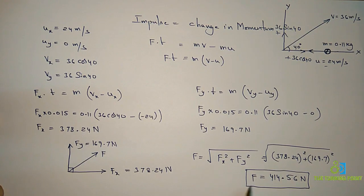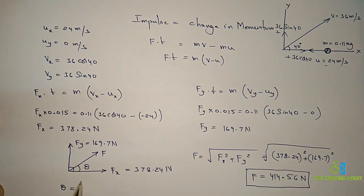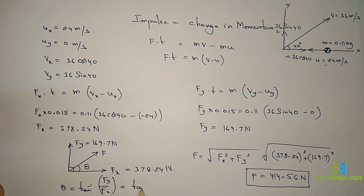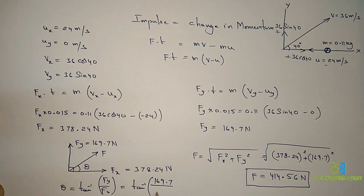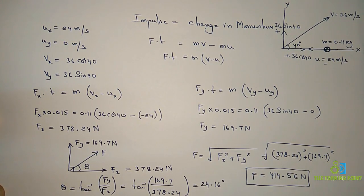Since force is a vector, we must also specify its direction. Let the angle be θ. Then θ = tan⁻¹(Fy / Fx) = tan⁻¹(169.7 / 378.24). This gives an angle of approximately 24.16 degrees. So the resultant impulsive force is 414.56 newtons at 24.16° from the x-direction.